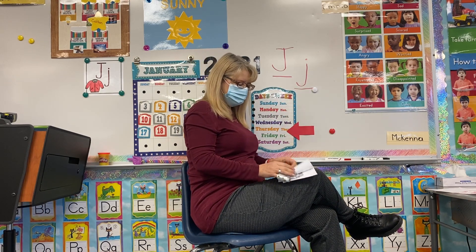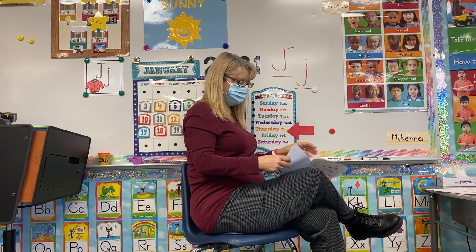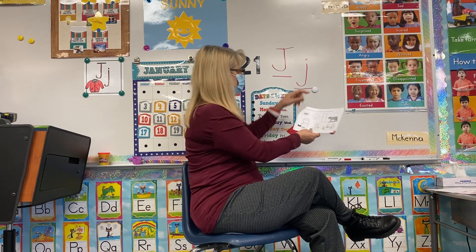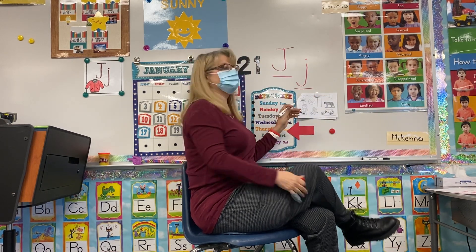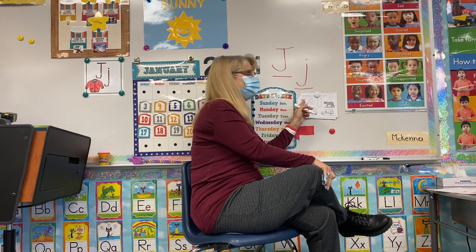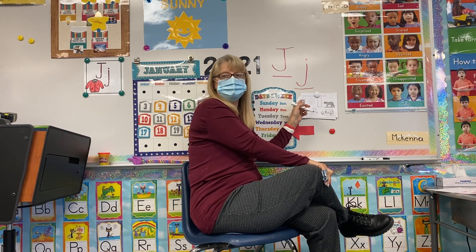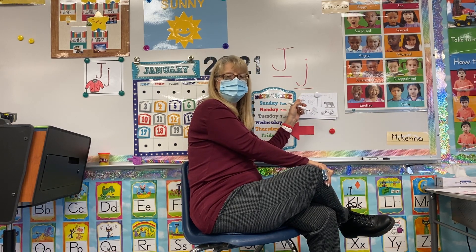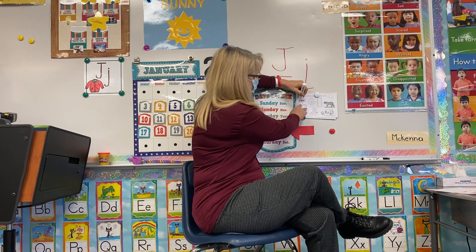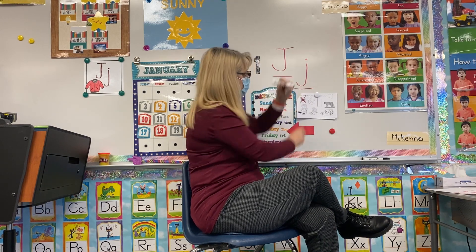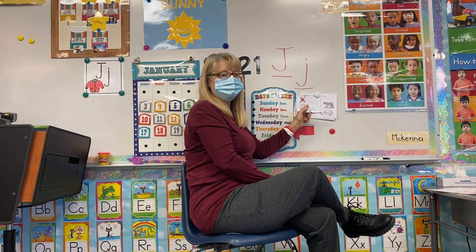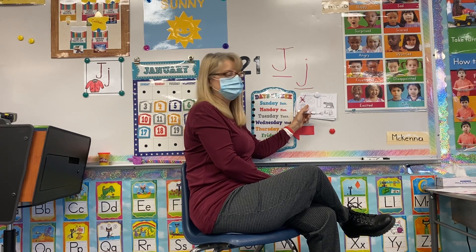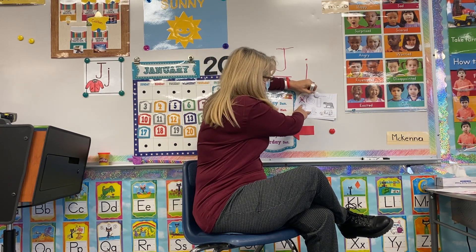Then we're going to look at page number four. We're going to see which pictures start with the letter J. Does 'sheriff' — does that sound with the J sound? No, so we're going to cross that one out. J, j, jack-o-lantern — does that sound with a J? Yes. So we're going to circle that, and we'll go back and color it later.